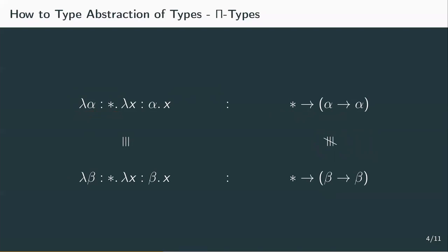And what better way to achieve this than with an abstraction? We're going to use a pi type as the type of a type abstraction in a lambda term. This way we get an abstraction in the type if we have an abstraction over a type in the term. With this, we've gathered all necessary intuitions and ideas to formally define the types and terms of the lambda 2 calculus.